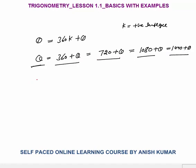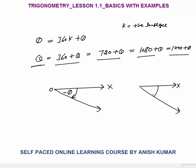Now let's talk about negative angles. Let's say this is OX and this is OY. In the clockwise direction the angle is negative. Let's say the angle is theta, so we will denote this as minus theta. If this angle in the clockwise direction is 60 degrees, we will say it is minus 60 degrees, because clockwise direction angles are taken as negative.